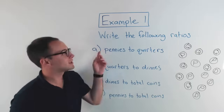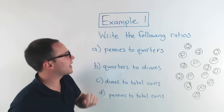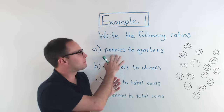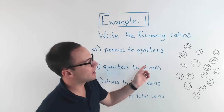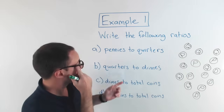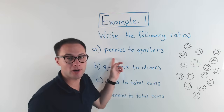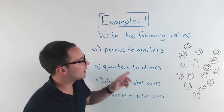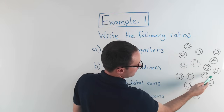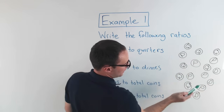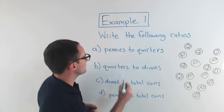Alright, here's example one. Write the following ratios. For part A, you're finding the ratio of pennies to quarters. Here are my coins. So all I need to do is find how many pennies there are. One, two, three, four, five, six — six pennies.